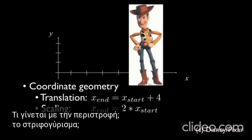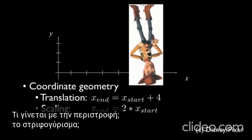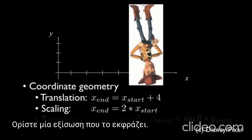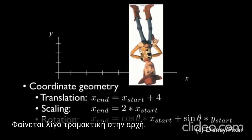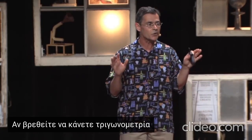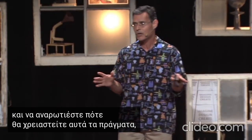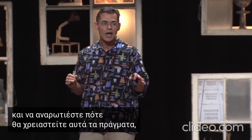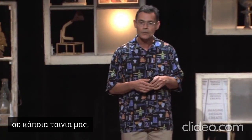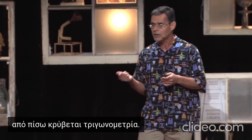How about rotation? Spinning around. The mathematics of rotation is trigonometry. Here's an equation that expresses that — it looks a little scary at first. You'll probably get this in 8th or 9th grade. If you find yourself sitting in trigonometry class wondering when you're ever going to need this stuff, just remember that any time you see anything rotate in one of our films, there's trigonometry at work underneath.